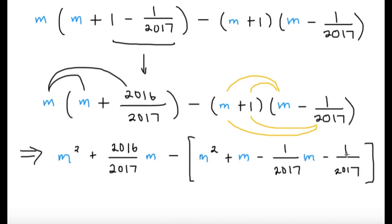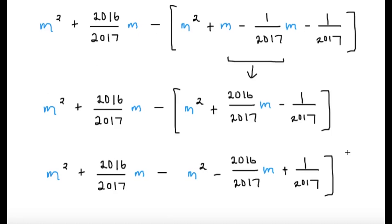So everything so far is just manipulation by algebra. Let's try to simplify things further. m minus one over 2017 m, that's just simply 2016 over 2017 m. And then we can remove the parenthesis here. So minus m squared, make sure to distribute the sign to all of the three expressions here. So it becomes minus m squared minus 2016 over 2017 m, and then plus one over 2017. And this is the part where nice stuff is going to happen because we can cancel the m squared, we can cancel the 2016 over 2017 m. And what remains is something that doesn't even have m.